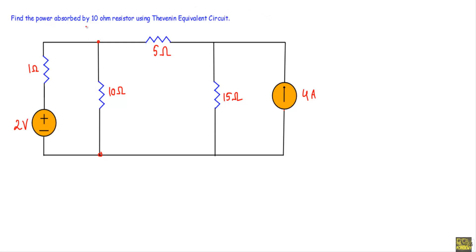In this video I will show you another example of a Thevenin equivalent circuit. I will assume you know how to deal with series-parallel circuits and how to apply supermesh, mesh analysis, nodal analysis, supernode analysis, superposition theorem, Kirchhoff's voltage law, and Kirchhoff's current law. The goal is to find the power absorbed by the 10 ohm resistor.